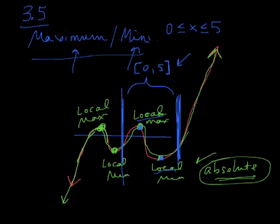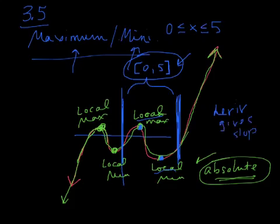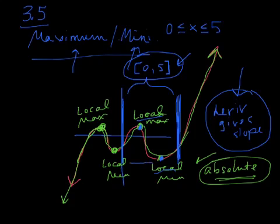And this point right here is the smallest. So you would say there is an absolute maximum on the interval from 0 to 5 at this point, and then you do have an absolute minimum at this point. Remember, we started doing derivatives because that gives us the slope of the tangent line. We learned that where these local maximums and minimums occur, they occur when the tangent line slope is 0 — when we have a horizontal tangent line. So you're looking for places where the derivative is equal to 0.